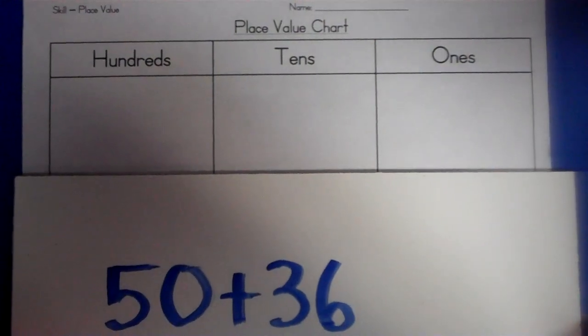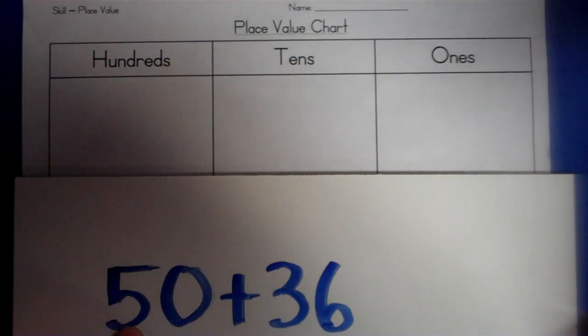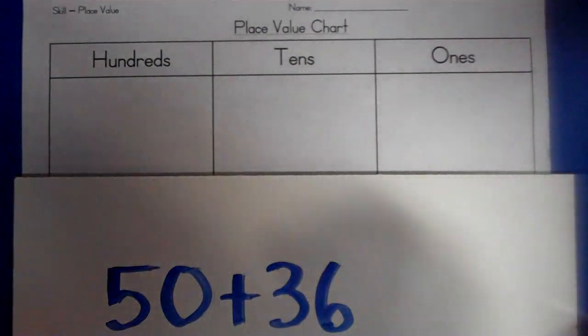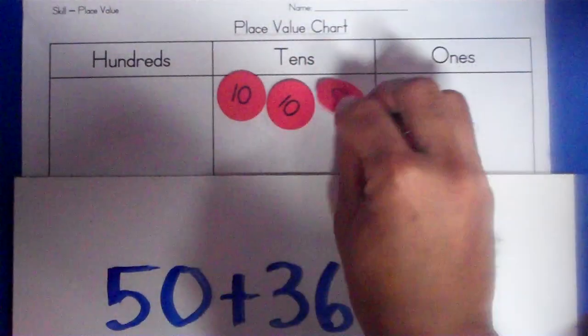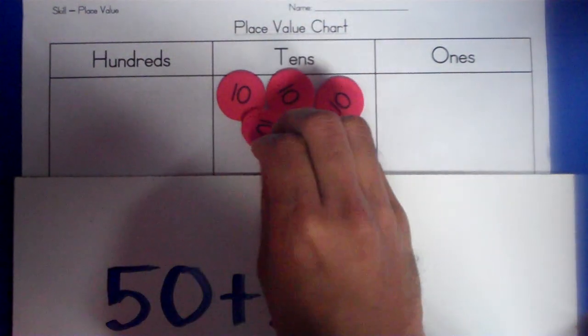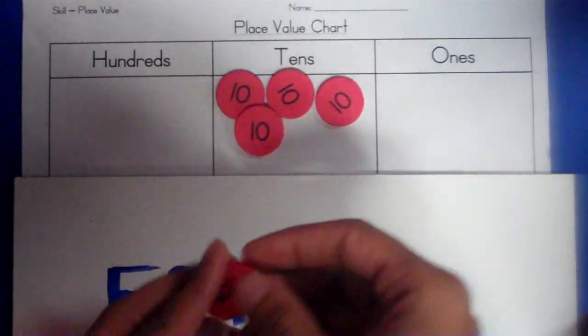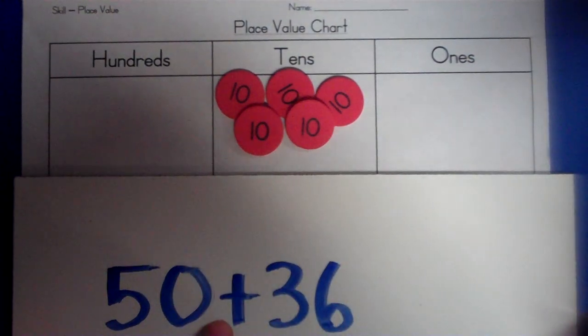We have 50 plus 36. This tells me that I have 5 tens and 0 ones. That's what this number represents. 50 represents 5 tens and 0 ones. So I'm going to place 5 tens and 0 ones. 1, 2, 3, 4, 5 tens. I have 5 tens and 0 ones.